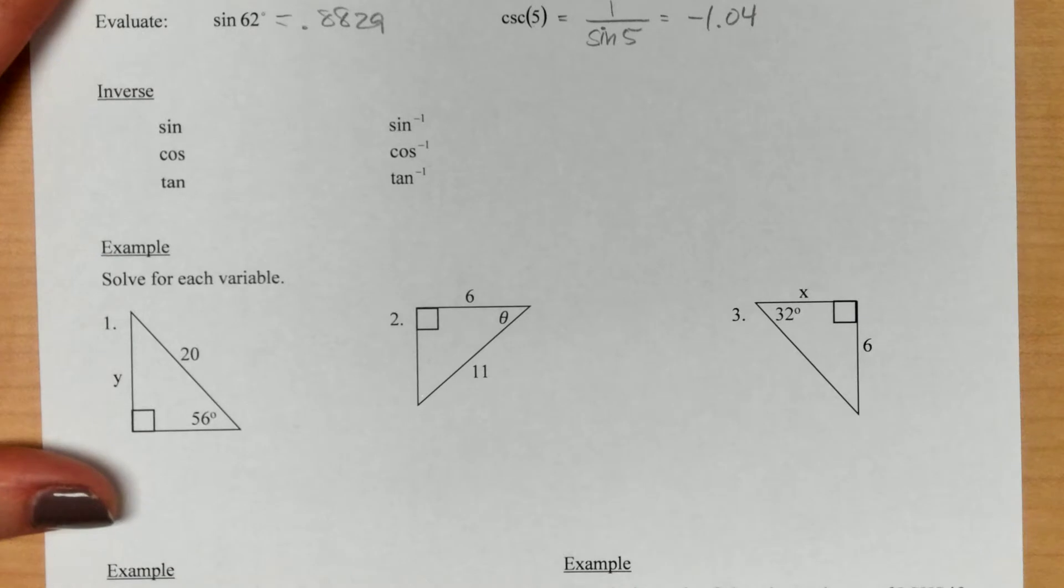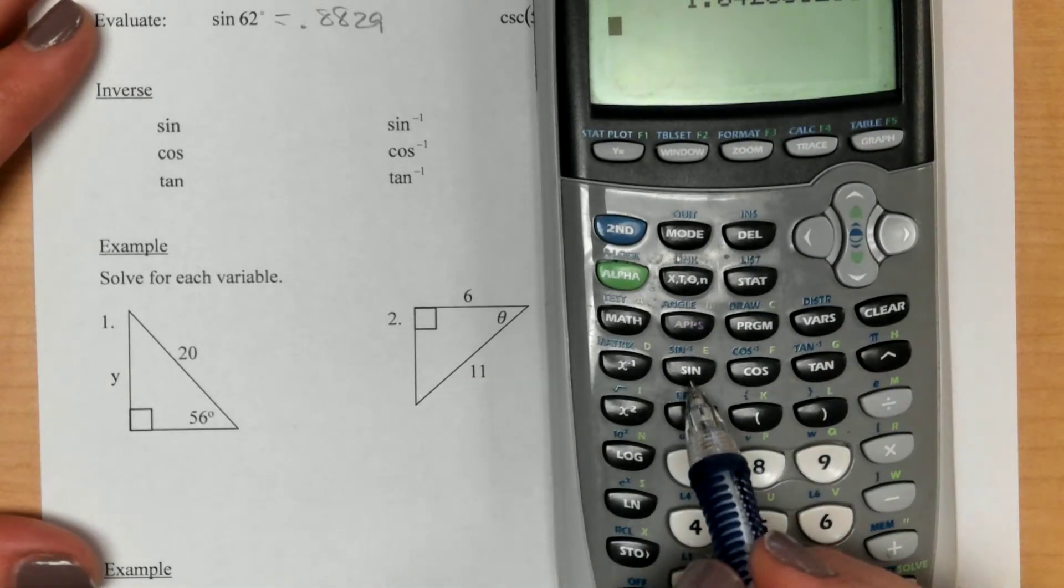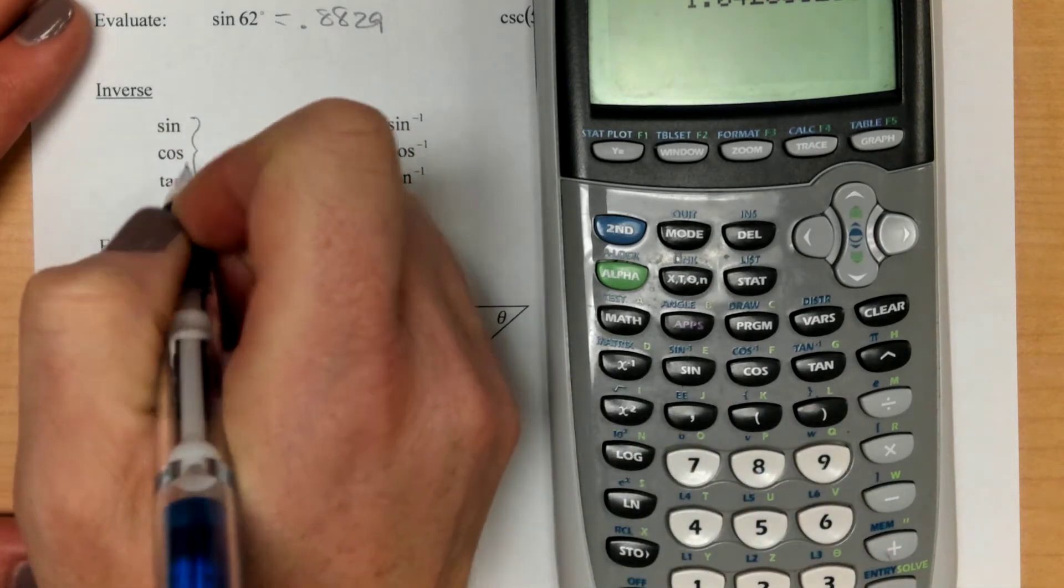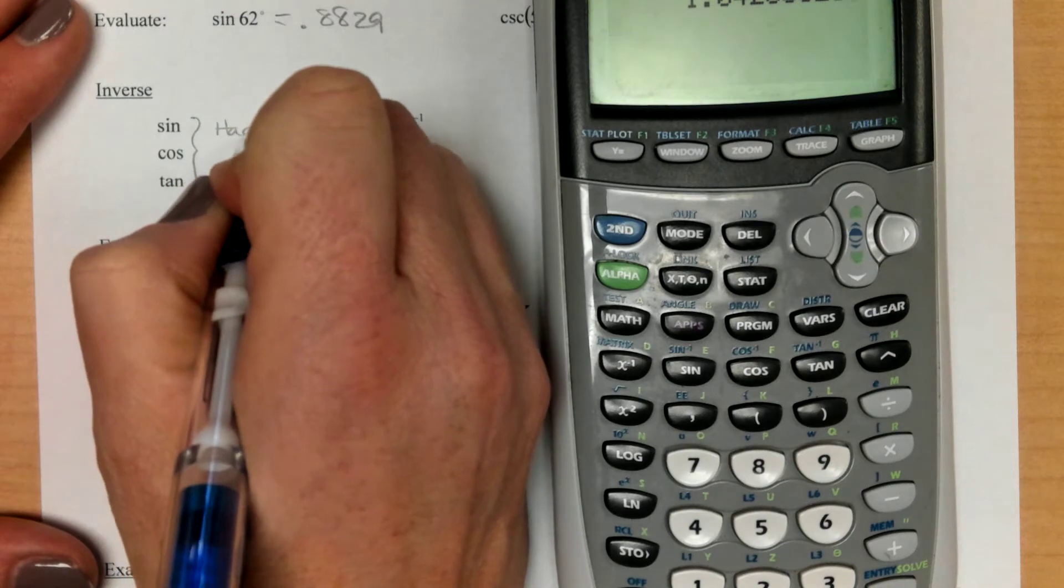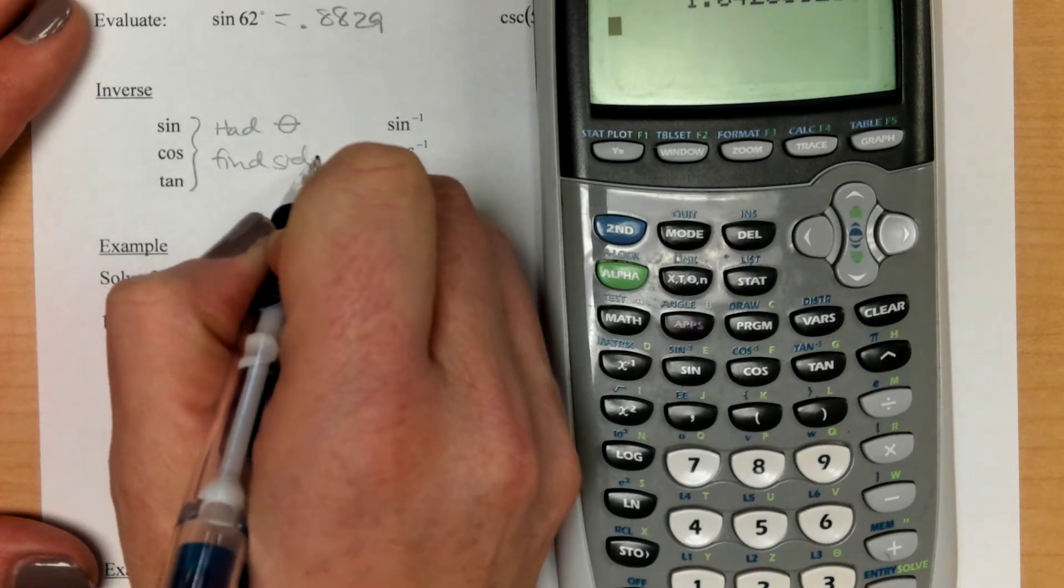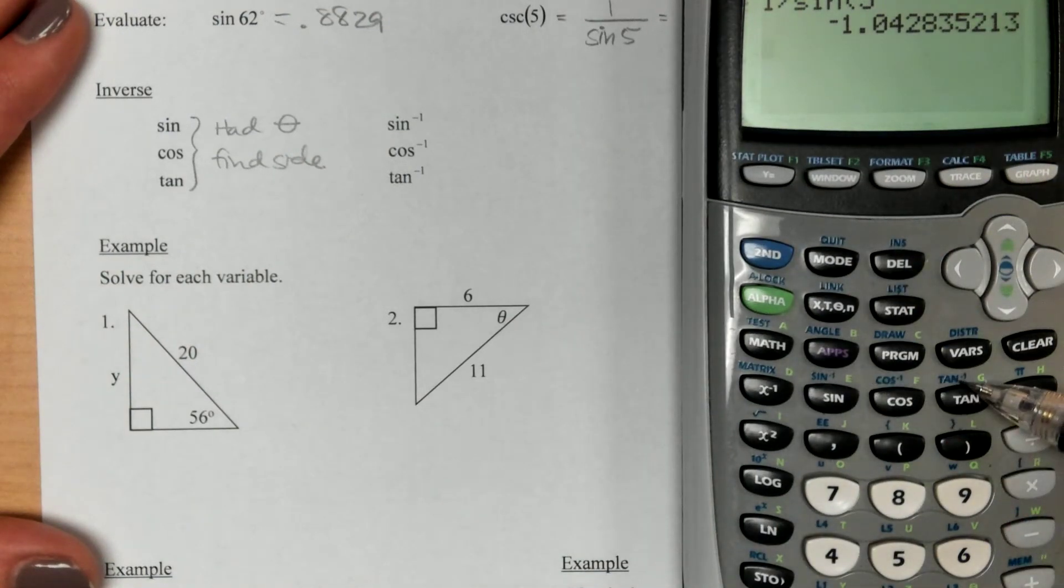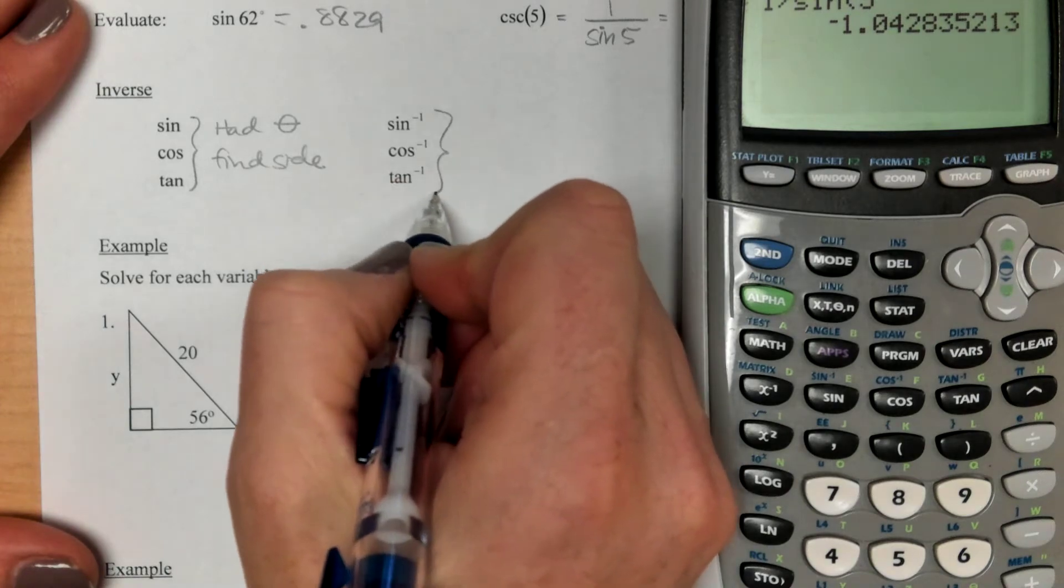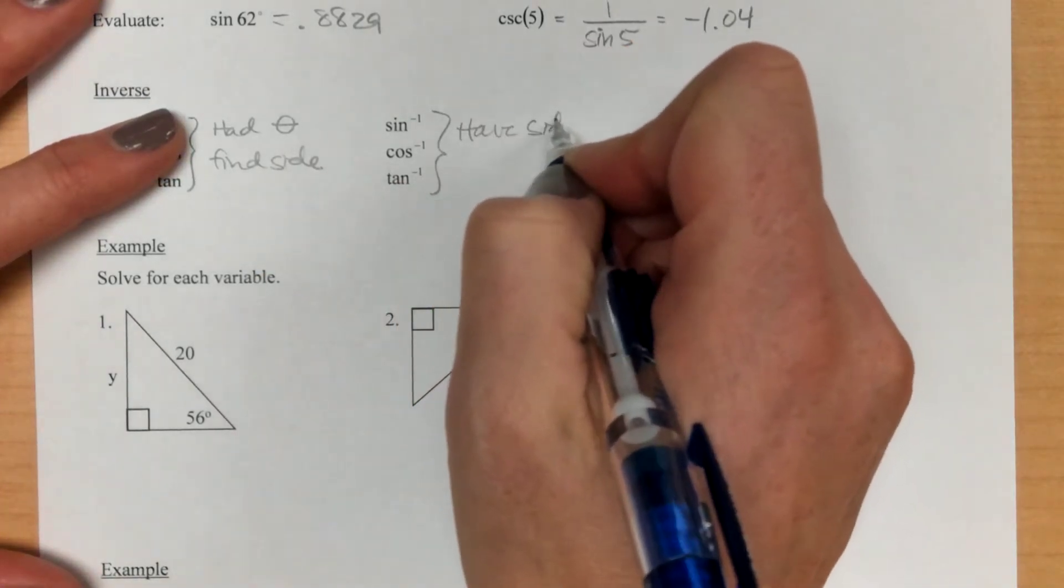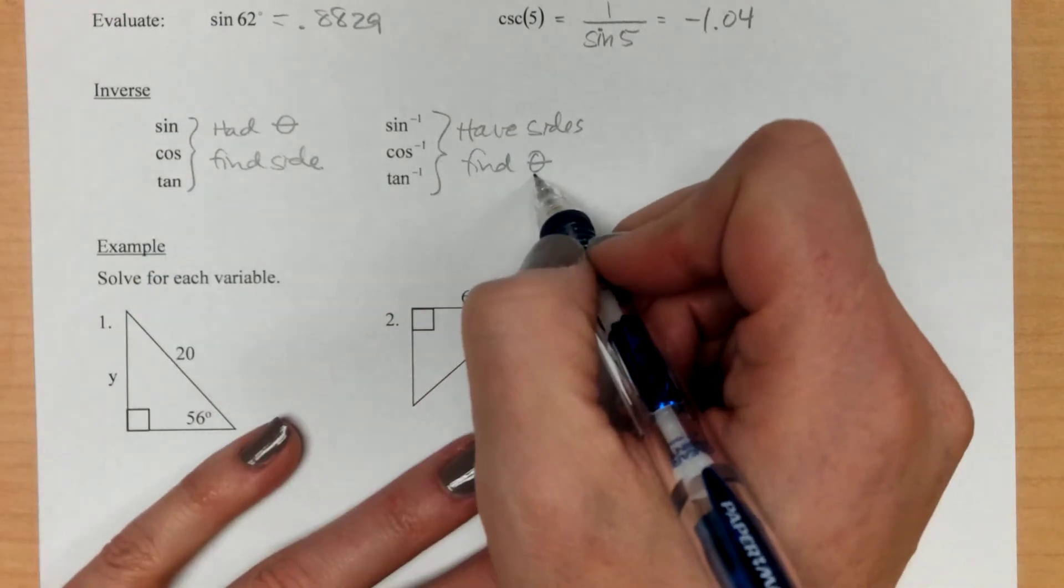So there are two different types of trig buttons that you have on your calculator. You have your regular, your sine, cosine, and tangent. And those are from when you were a sophomore doing that SOHCAHTOA stuff. This is all when you had the angle and you were finding a side. And then our inverses, which are right above them, this is the exact opposite. So we have sides and we're looking to find our theta. So we're looking to find our angle. So an inverse actually finds us an angle.